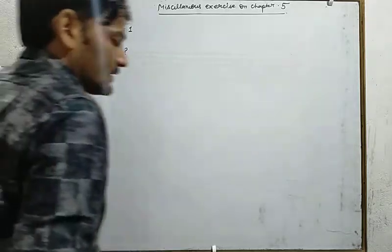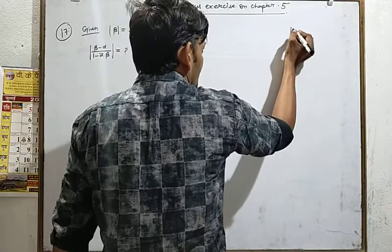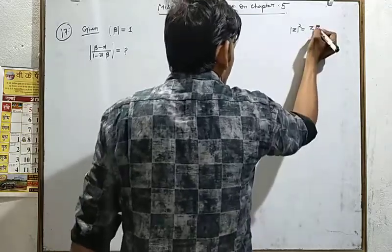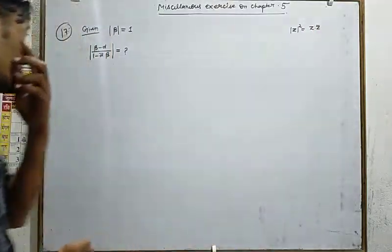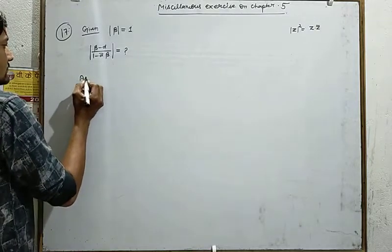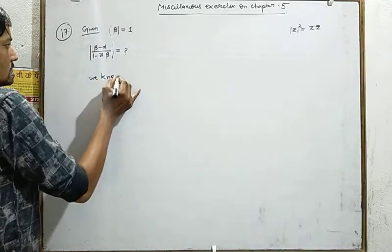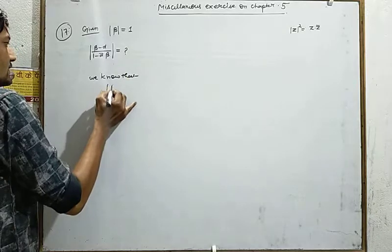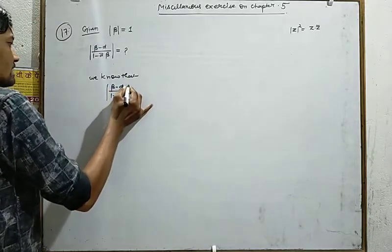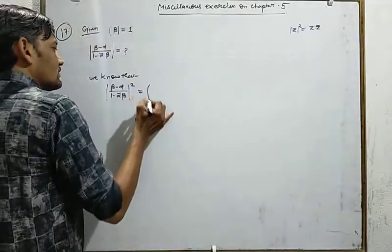हम यहाँ पर property का use करेंगे। हमारे पास property होती है कि mod z square की value होती है z into z-bar। तो यहाँ से हम consider करते हैं: mod of (beta minus alpha) divided by (1 minus alpha-bar beta), whole square।